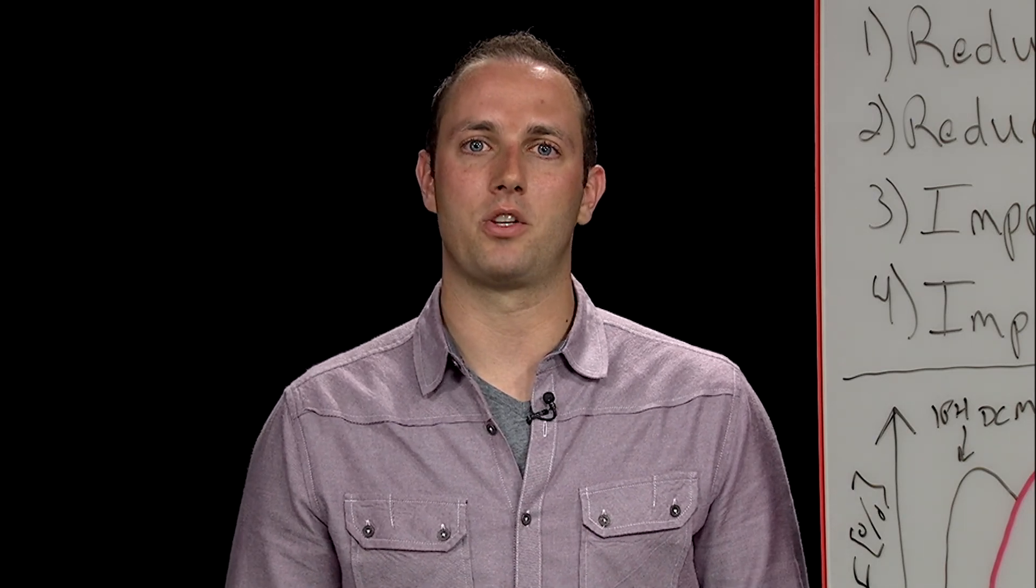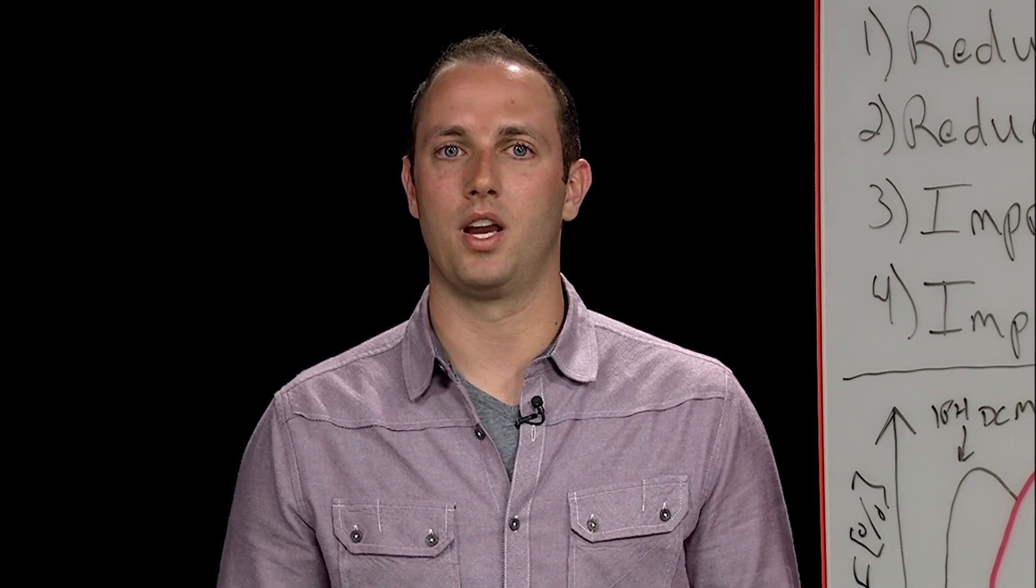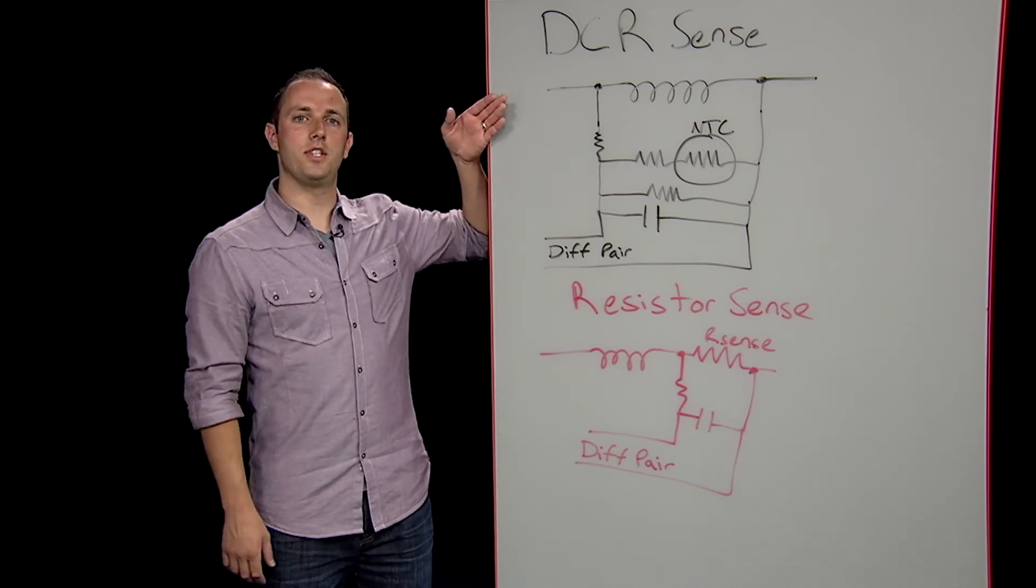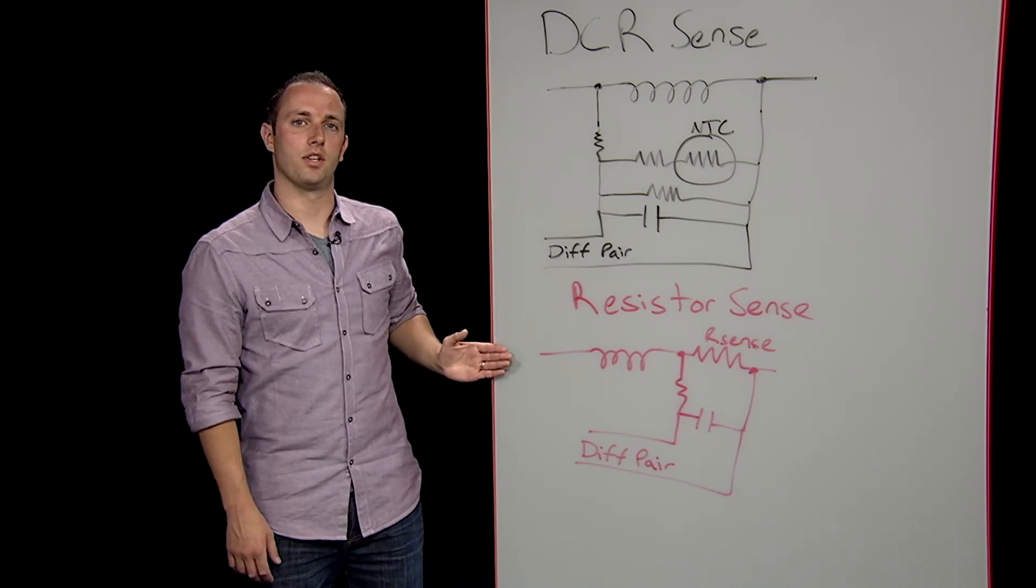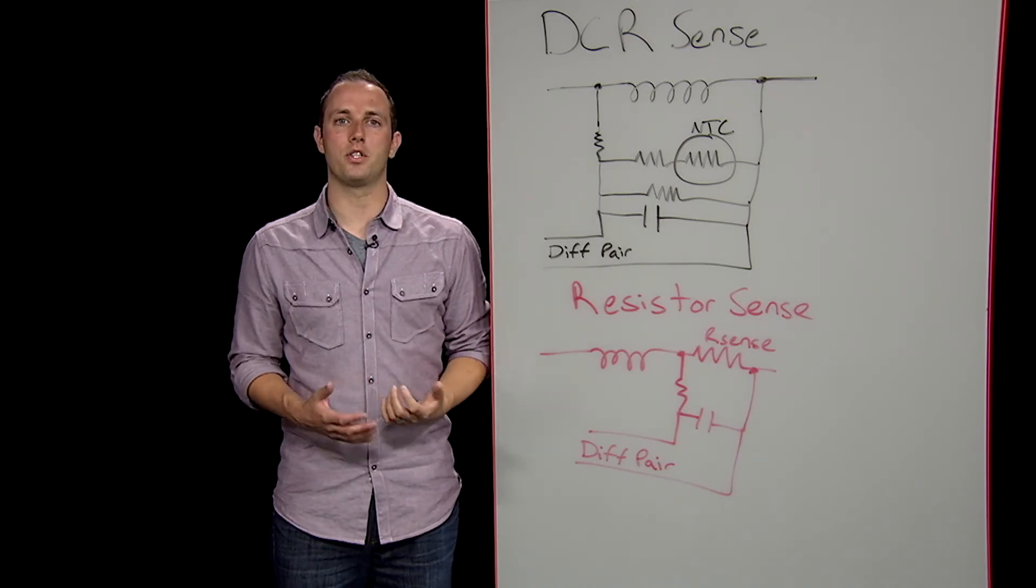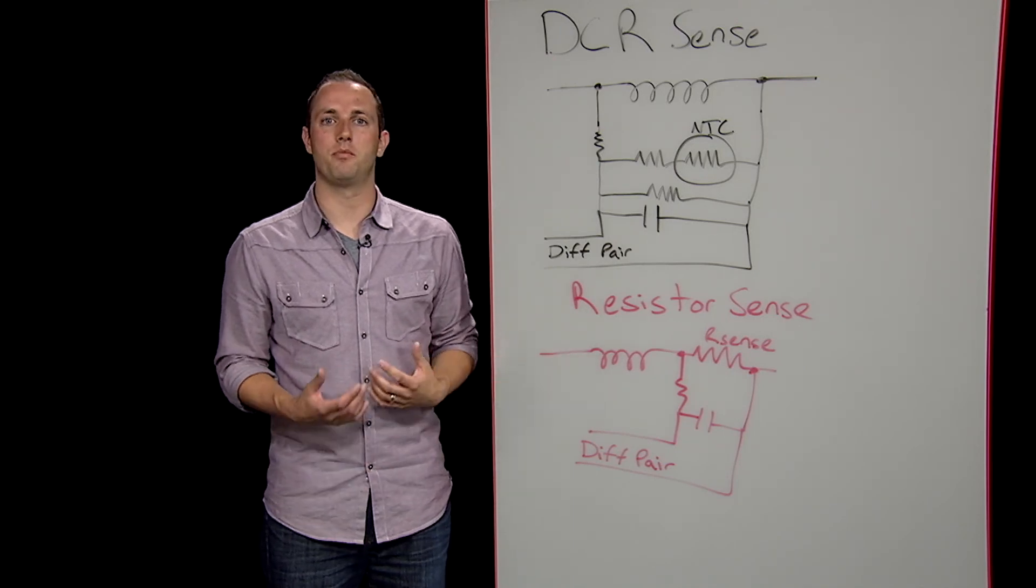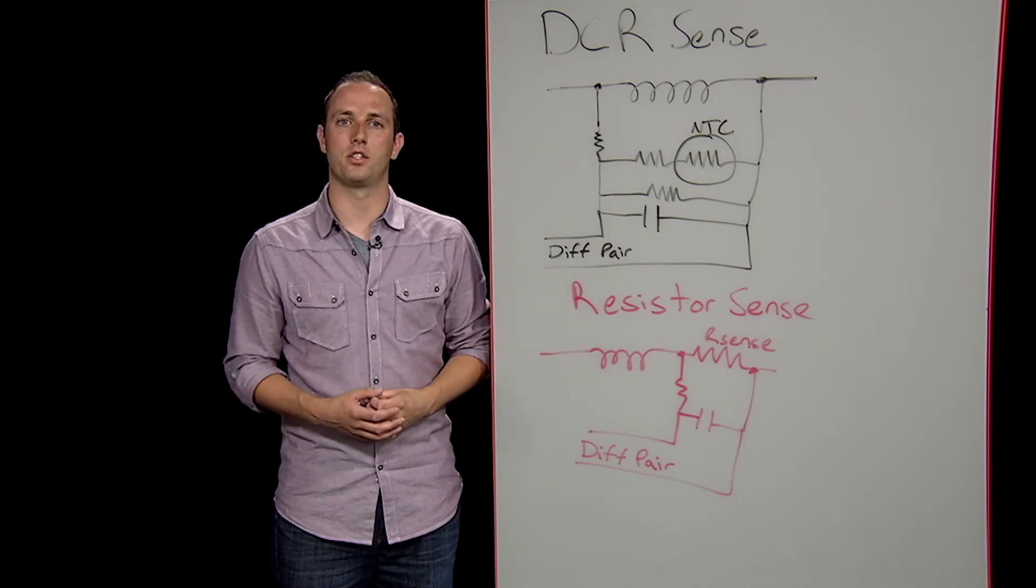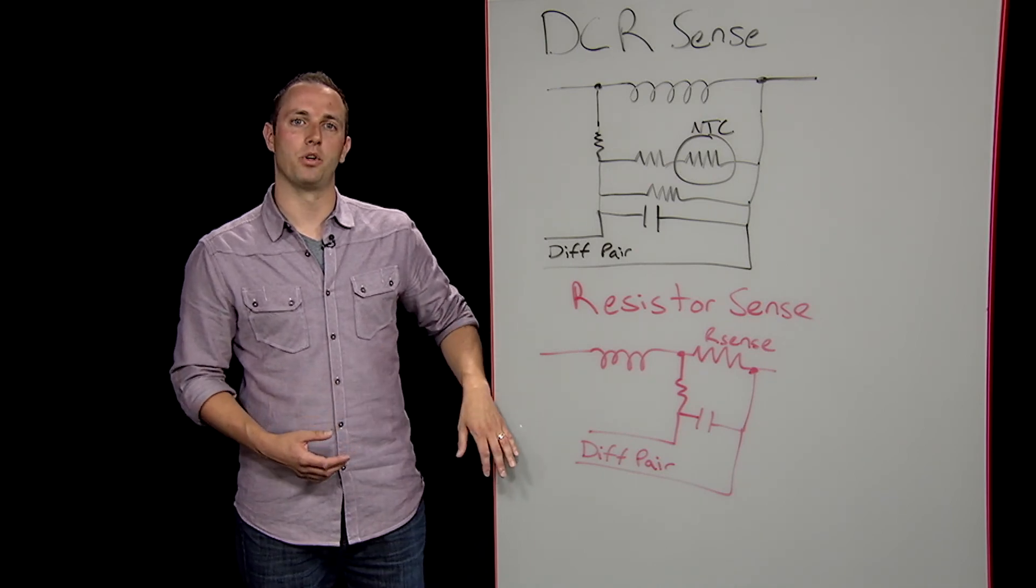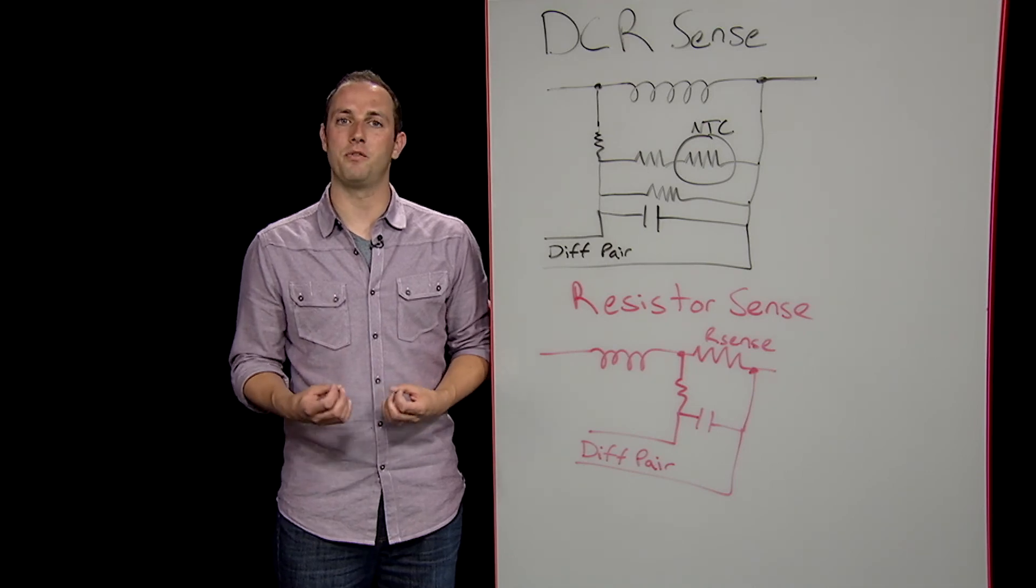Now there's a number of ways to balance phase current that we won't dive into too deeply for this video, but each has its own pros and cons associated with it. Two common current sense methods are DCR sensing and resistor sensing. DCR sensing uses the parasitic DC resistance of the inductor to generate a current sense signal that's fed back to the controller. Resistor sensing places a small sense resistor in series with the inductor instead of using the DCR. Both methods require a passive network around the sense components to provide filtering and must be replicated for each phase of the system. A differential pair for each phase must then be routed back to the controller, which increases the overall layout complexity.